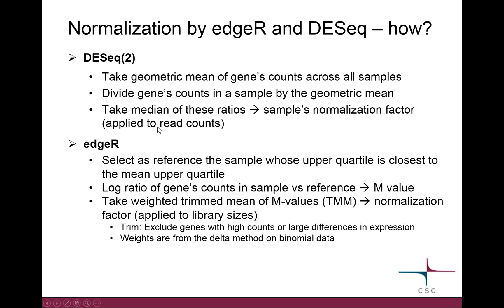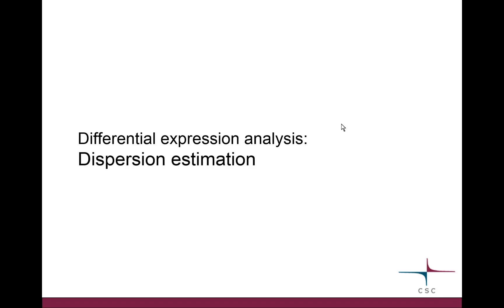DESeq2 normalization works by taking the geometric mean of each gene's counts across all samples, then dividing the counts in each sample by that geometric mean to get a ratio for each gene in each sample. Within one sample, you take the median of all those ratios, and that is your normalization factor. Essentially, you create a reference sample from the geometric means and divide by that.